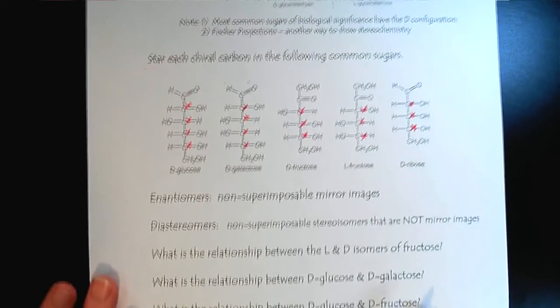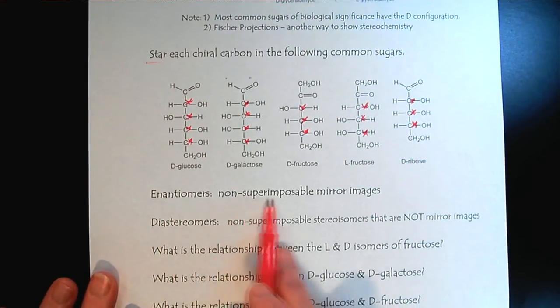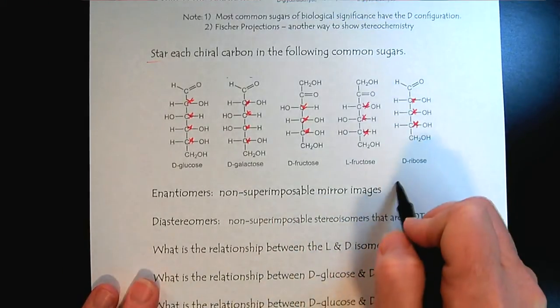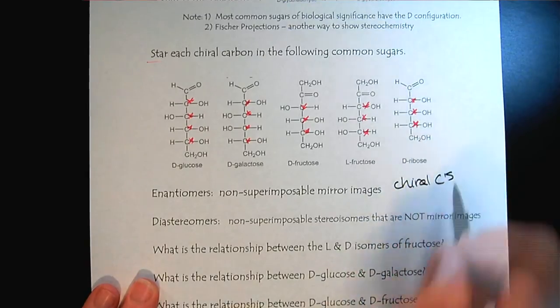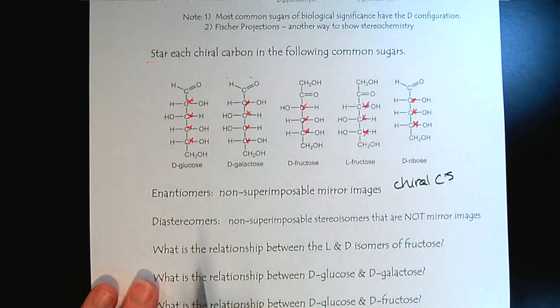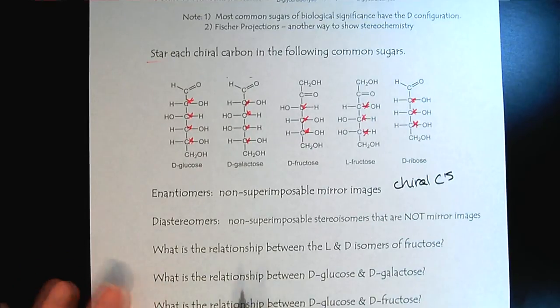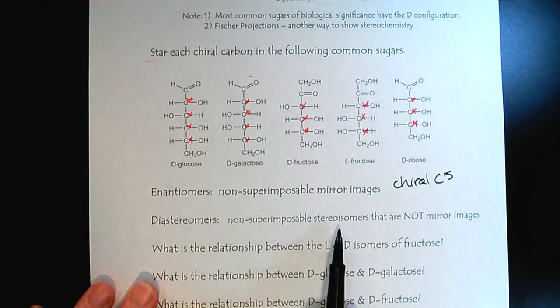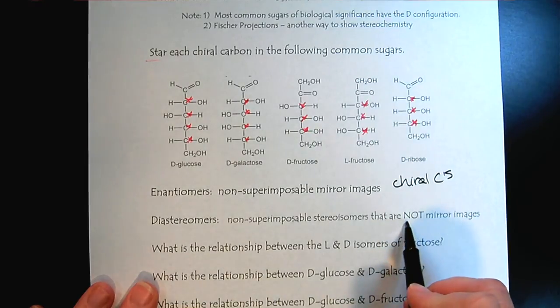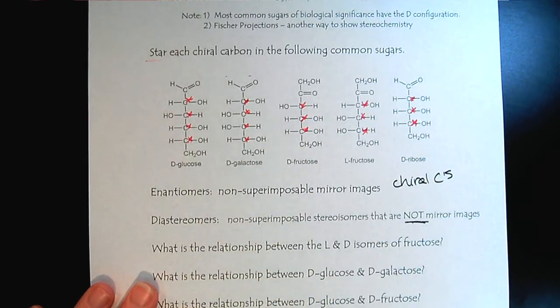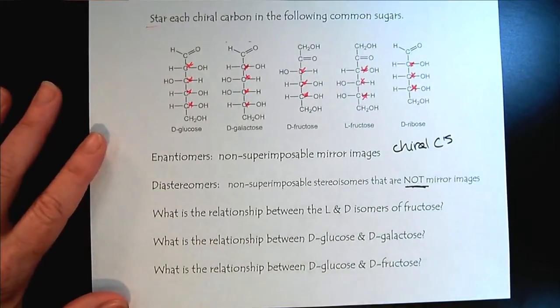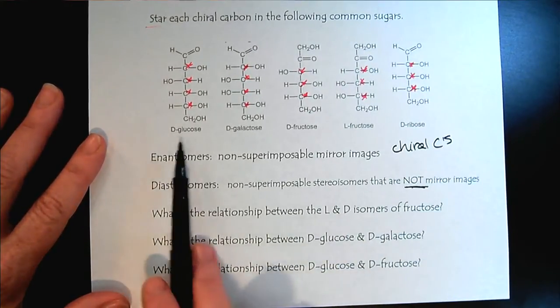So a little bit of review. Remember the enantiomers are the non-superimposable mirror images, and that comes from having chiral carbons. But what happens when we have so many chiral carbons? Well, that creates the possibility of a diastereomer. So these are non-superimposable stereoisomers that are not mirror images. So let's look at these two terms and compare them to these various sugars we're learning about.